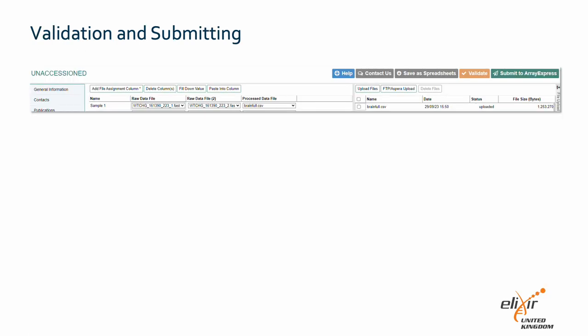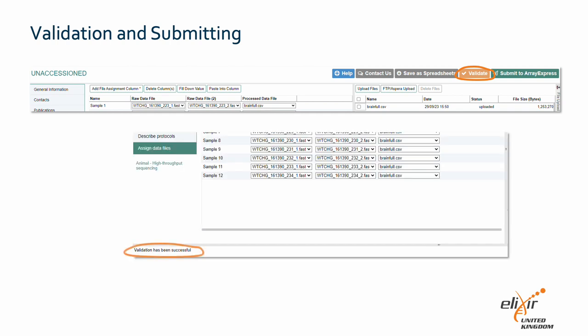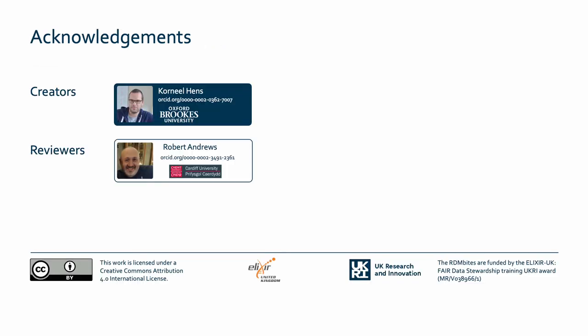You are now all set for submitting your data. First, click the 'Validate' button. This will automatically check if all fields have been properly completed. Hopefully you will get a message at the bottom of the page saying that the validation is successful. If the validation is not successful, you will find a list of problems you need to address before submission. When the validation is completed, you can now submit your data. That concludes our RDM byte on how to submit RNA-seq data to ArrayExpress.